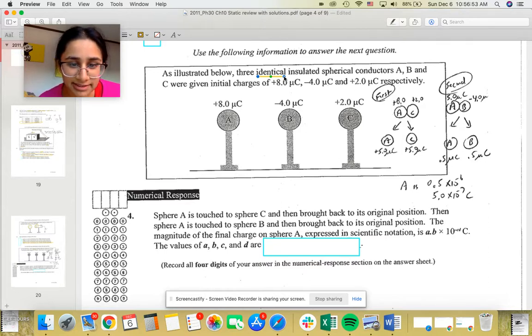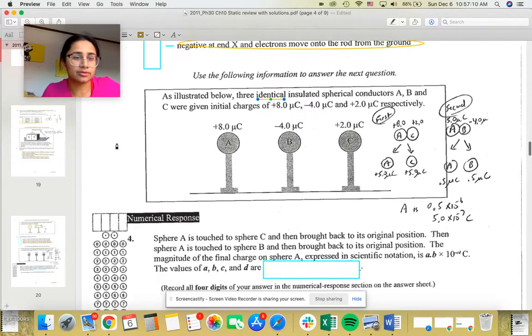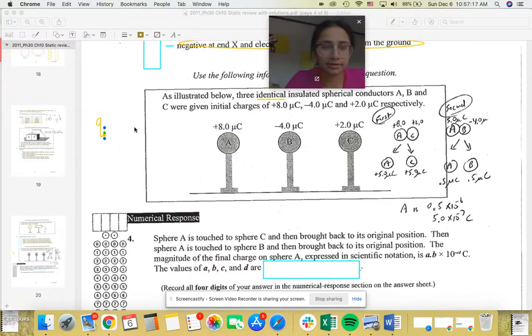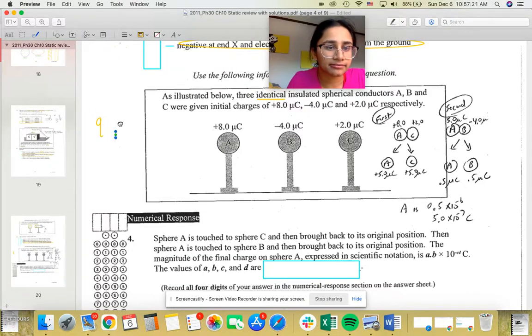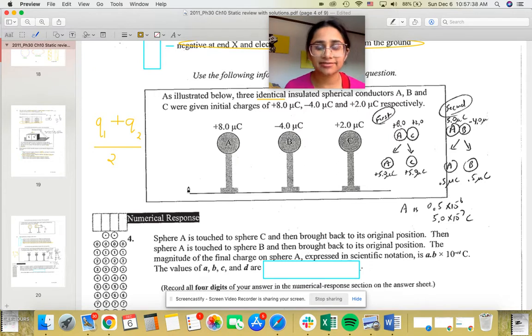Now it's basically saying to find out the charge of A when sphere A is touched to sphere C, then brought back to its original position. Then sphere A is touched to sphere B, and then brought back to its original position. So let's just do this out. Basically what we're going to be using is a simple model to find out the charge. And it's going to be Q1 plus Q2 over 2. So basically finding the average, because when they're identical, they're going to split and have that same charge at the end anyway.